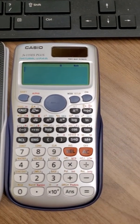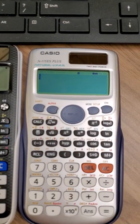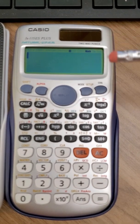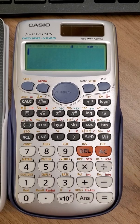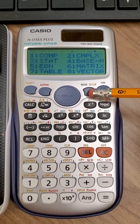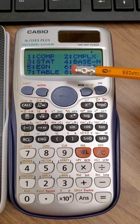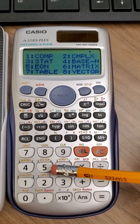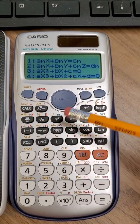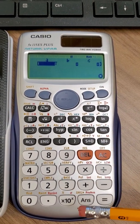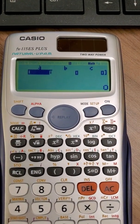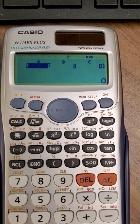To solve a quadratic, the first thing we're going to do is go to the mode button. Mode and number five is equation, and option three is quadratic. If you notice, that's going to prompt me for the coefficients a, b, and c.